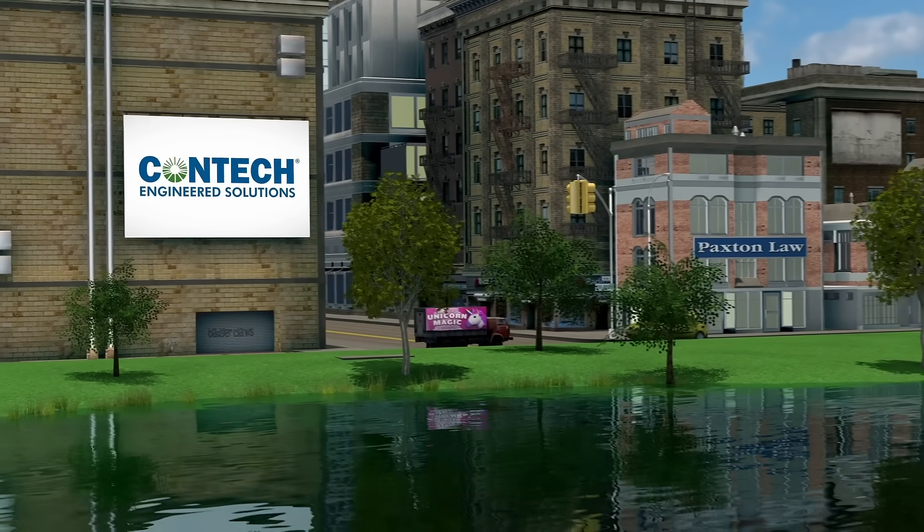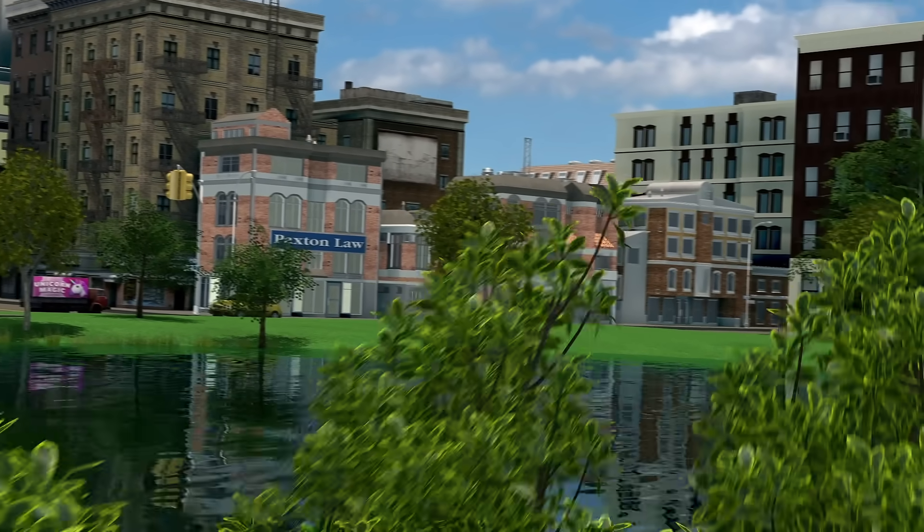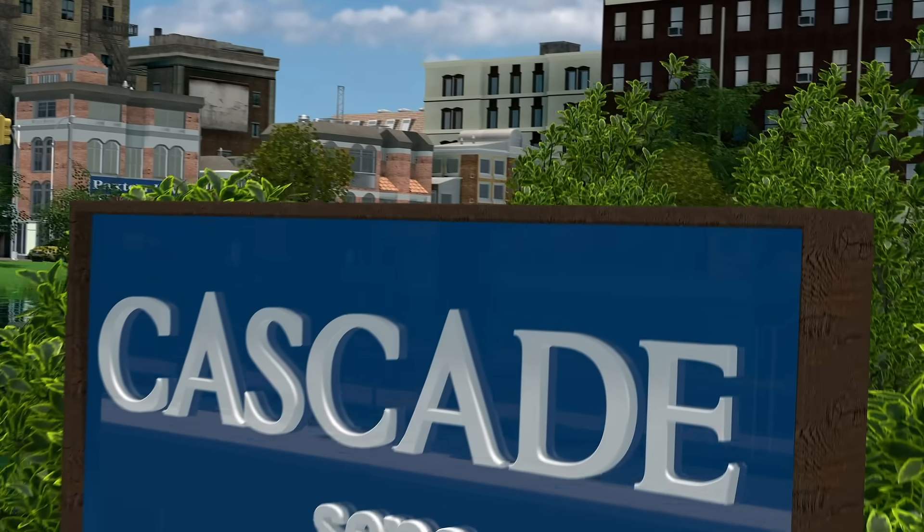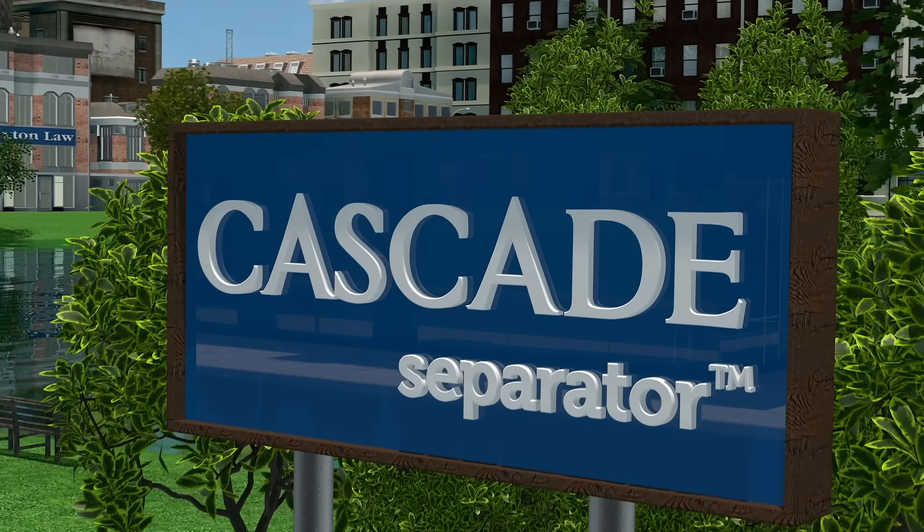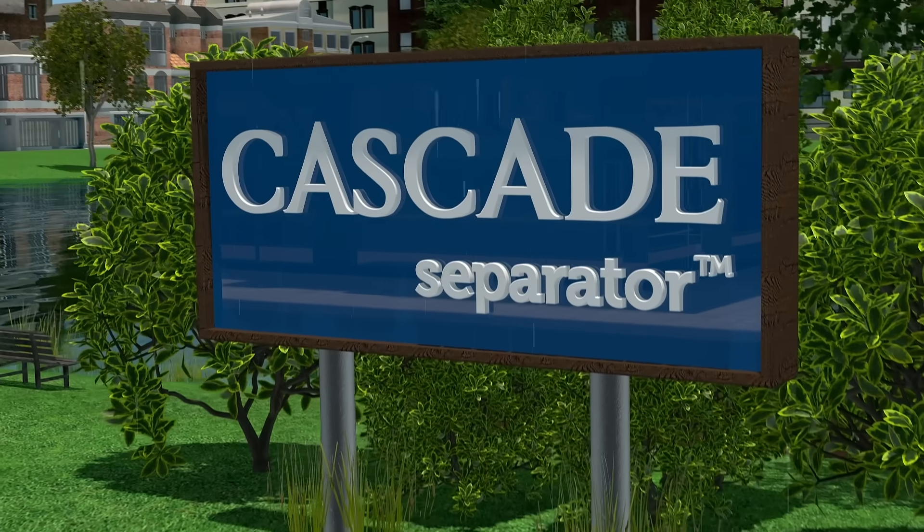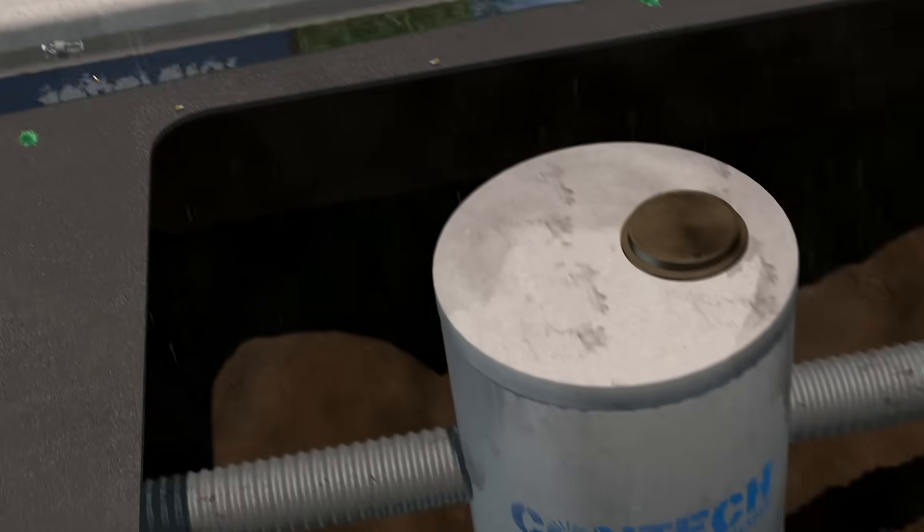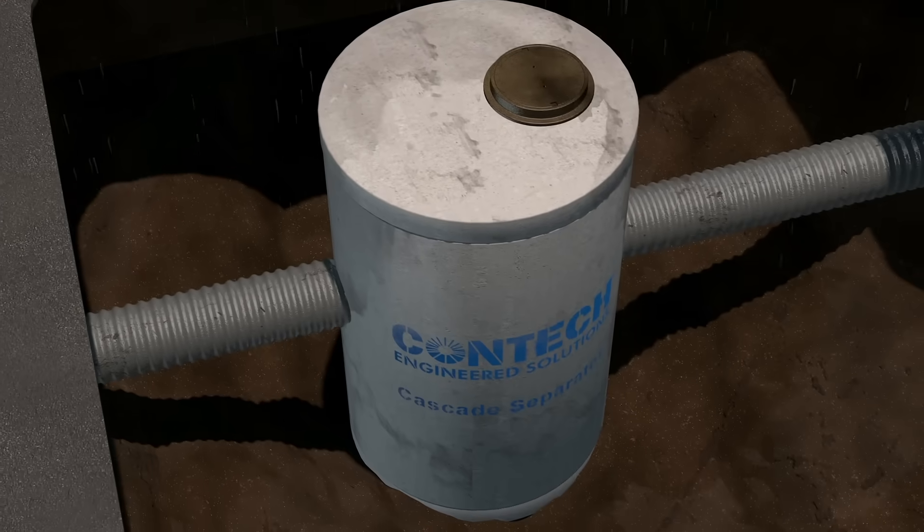In addition, nutrients such as phosphorus can attach to sediment particles, further degrading water quality. The Cascade Separator is an innovative hydrodynamic separator that excels at sediment capture and retention, while also removing hydrocarbons, trash, and debris from stormwater runoff.